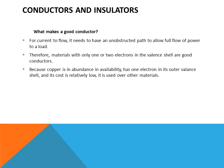For current to flow, it needs to have a non-obstructed path to allow full flow of power to the load. Materials with only one or two electrons in their valence shell will work as conductors. Because copper is abundant and has one electron in its outer valence shell, and its cost is relatively low, it is used over other materials. Copper is one of the best conductors because of its low cost and abundance.